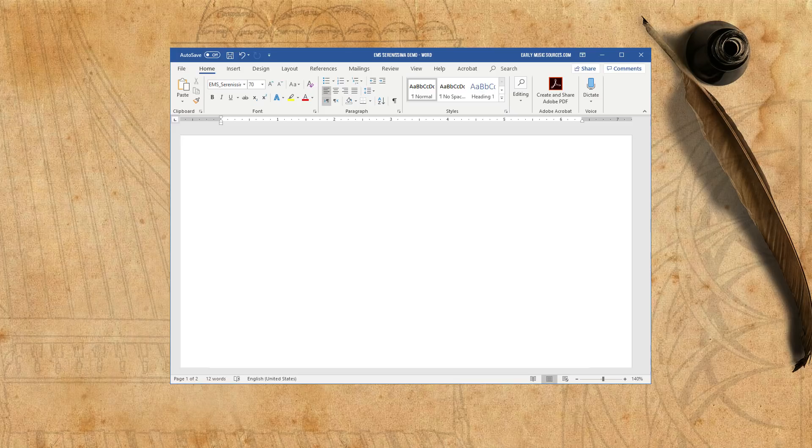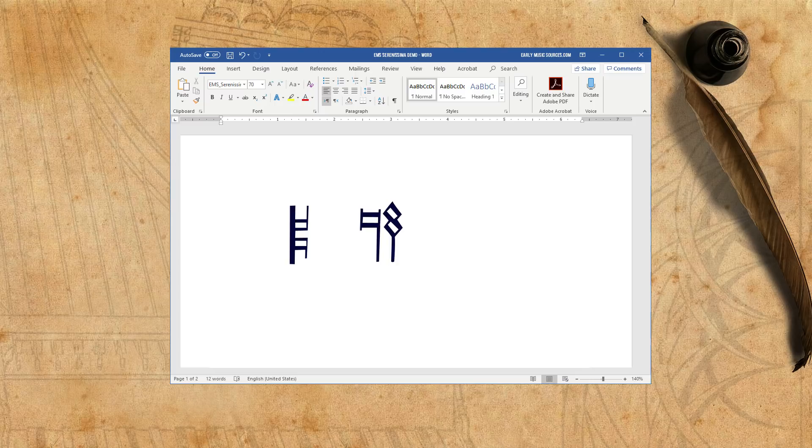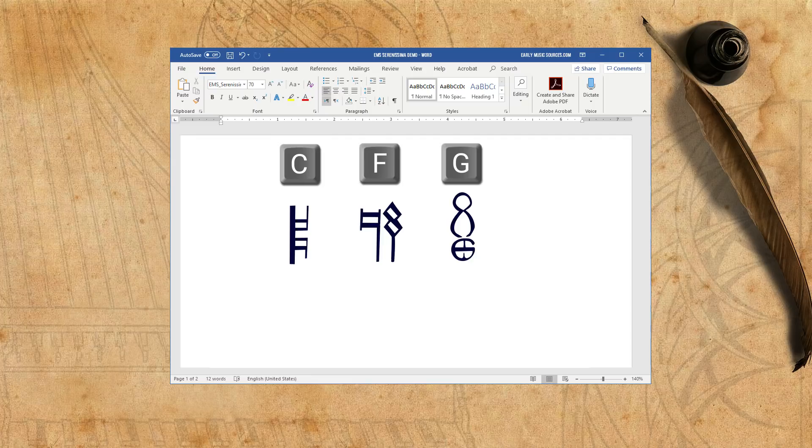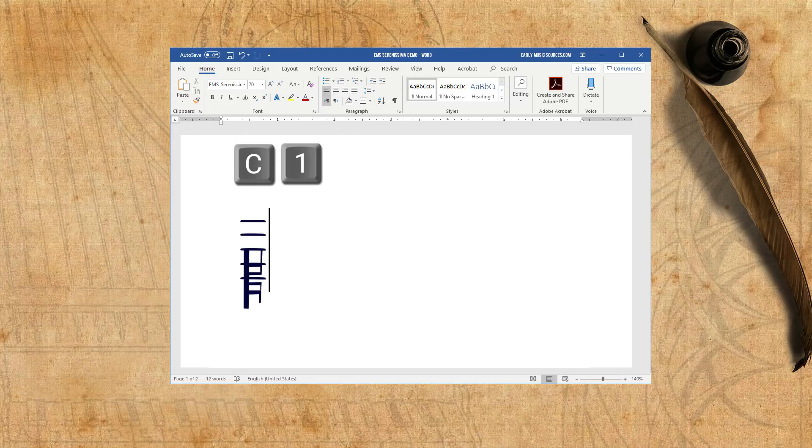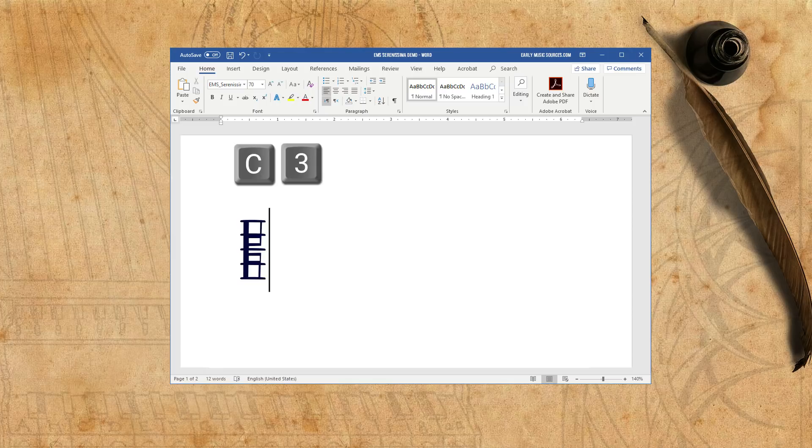Every music line starts with a clef, so why won't we start with clefs as well? The three clefs, C, F and G, are created by using, you guessed it, capital C, F and G. In order to position them on a staff, just add the relevant line number. For instance, in order to have a C1 clef, type capital C and then 1. In order to have a C3 clef, type capital C and then 3. You got the point. Check the map for the available clefs.